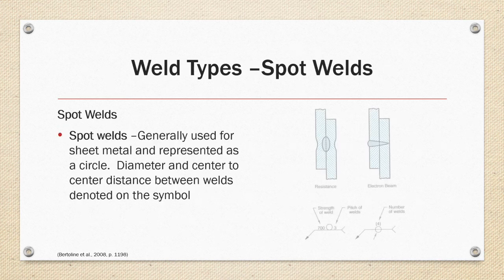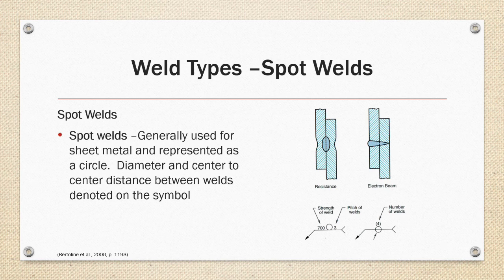Spot welds are generally used for sheet metal and represented as a circle. The diameter and the center-to-center pitch between the welds is denoted on the symbol. In the example, a resistance spot weld has a shear strength of 700 called out, with a pitch of every three increments. The second example is an electron beam weld that penetrates from both sides of the material, calling out a specific number of welds equally spaced.